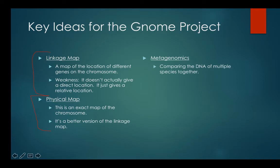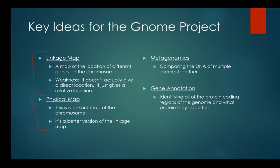Once you have a physical map of the chromosome and know where things are located, you can do something called metagenomics — taking the DNA of multiple species and comparing them together. We'll come back to this at the end of the presentation to discuss how we can compare DNA of different species to find out which proteins are really important. And finally, there's gene annotation — basically identifying all the protein-coding regions in the genome and what they code for. It's a fancy way of saying they want to find out what genes make what proteins.